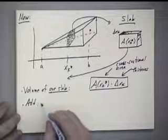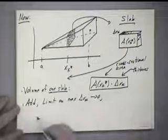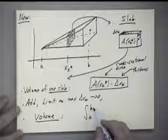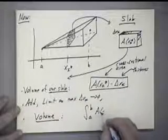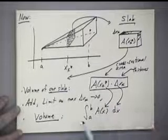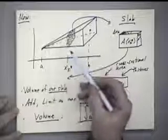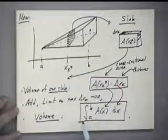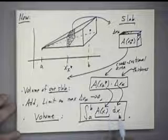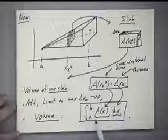If we add up all slabs and take the limit as the maximum of the delta x_k's goes to zero, we end up with a volume integral that looks exactly like previous integrals: the integral from a to b of A(x) dx. This is the volume formula from slicing. When memorizing this, don't just memorize the integral from a to b of A(x) dx — think of it as cross-sectional area times thickness, which will help you get the right form under the integral sign.